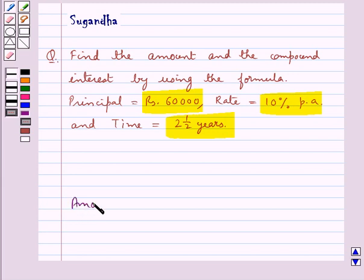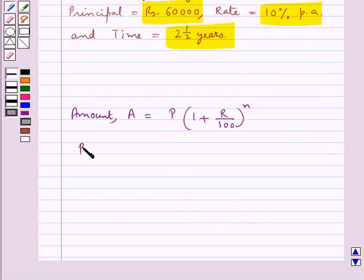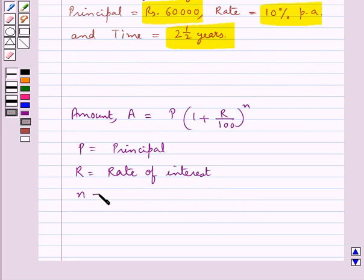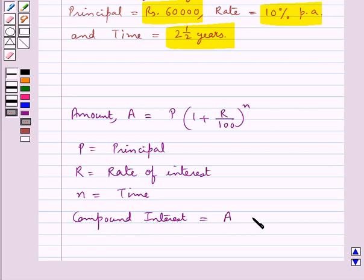First let's recall the formula for the amount: A is equal to P into 1 plus R upon 100, whole to the power N. Here P is the principal, R is the rate of interest, N is the time. Also, compound interest is equal to amount A minus the principal P. This is the key idea for this question.